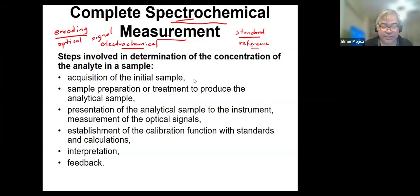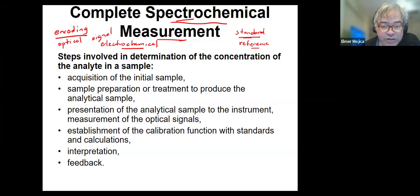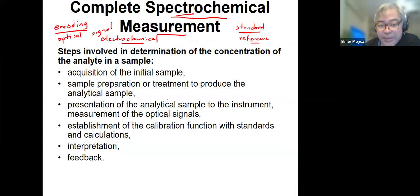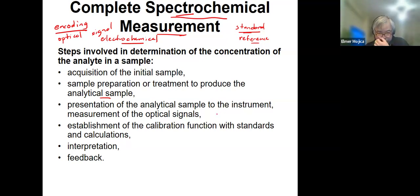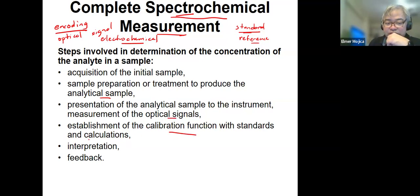The first thing is the acquisition of the initial sample, followed by sample preparation or treatment to produce the analytical sample, then the presentation of the analytical sample to the instrument, measurement of the optical signal, and then establishment of the calibration function with standards, calculations, interpretation, and then feedback.